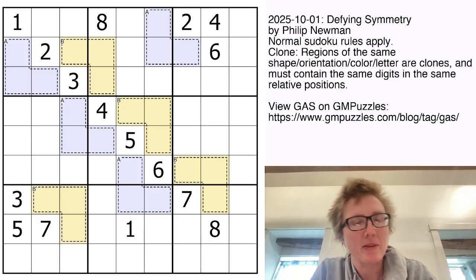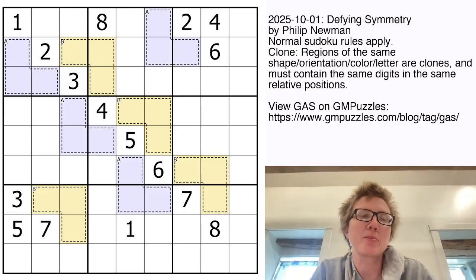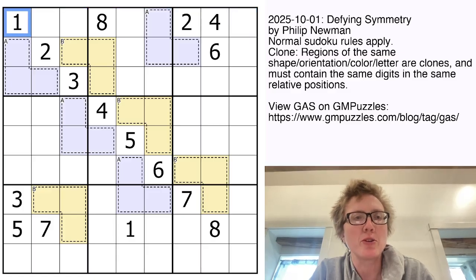So what do we have going on here? We have normal sudoku rules. That means we're placing the digits one through nine, once each in each row, each column, and each outlined three by three region.